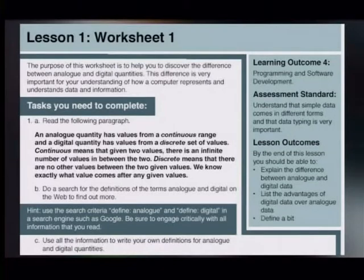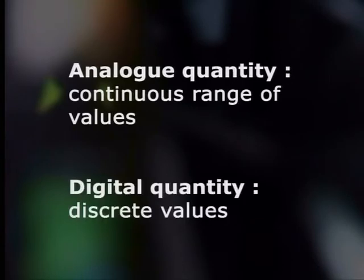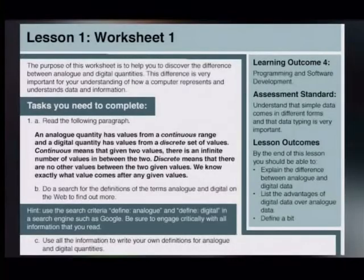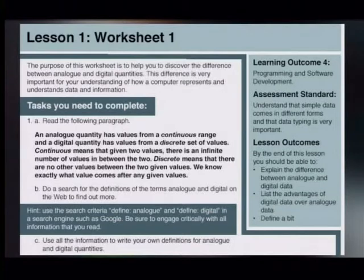Task 1A says: read the following paragraph. An analog quantity has values from a continuous range and a digital quantity has values from a discrete set of values. Continuous means that given two values, there is an infinite number of values in between the two. Discrete means that there are no other values between the two given values — we know exactly what value comes after any given value.